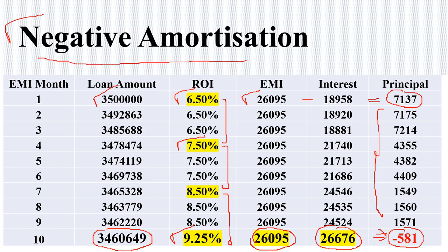This is a dangerous position because if this situation continues, every month there is a short payment, and that shortfall of interest gets added back to your principal, making recovery even larger. So this loan will become a never-ending case. Negative amortization is something not sought by anybody. After understanding amortization, you now understand what is negative amortization.